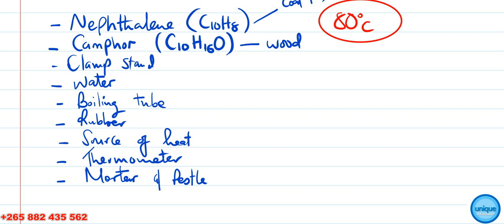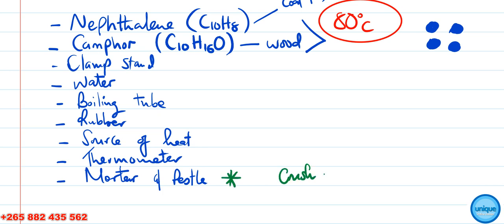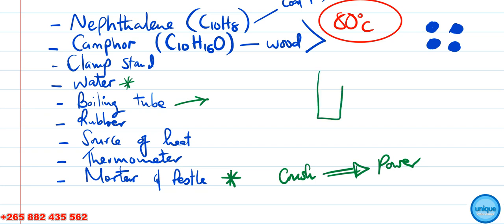In terms of procedures, the naphthalene comes in solid state — something like tablets. We're going to use the mortar and pestle to crush these into smaller pieces. Then we place them into the boiling tube.